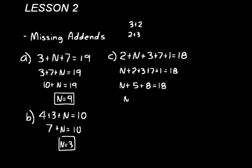Now let's add five and eight together, so I'll have N plus thirteen equals eighteen. We think to ourselves what plus thirteen would equal eighteen. Well, five plus thirteen would equal eighteen, so N equals five.